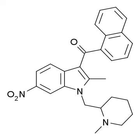AM1221 is a drug that acts as a potent and selective agonist for the cannabinoid receptor CB2, with a Ki of 0.28 nM at CB2 and 52.3 nM at the CB1 receptor, giving it around 180x selectivity for CB2.